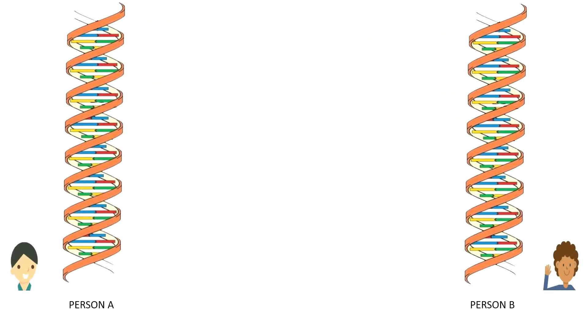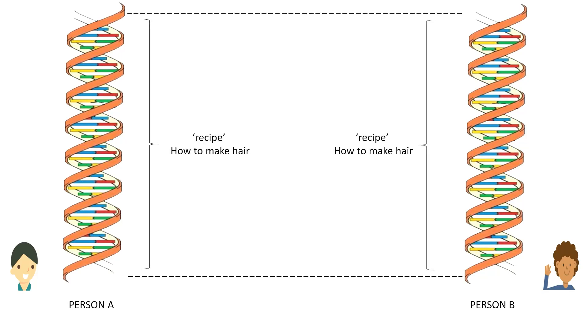Although both person A and person B have the information or recipe to make hair, person A's body has a slightly different version of the recipe as compared to person B, hence giving rise to a slightly different texture of hair.